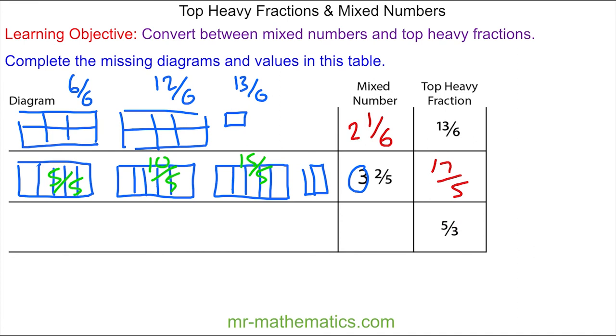So for five thirds, we have one hole which is three thirds, plus two more. So in total, we have one and two thirds.